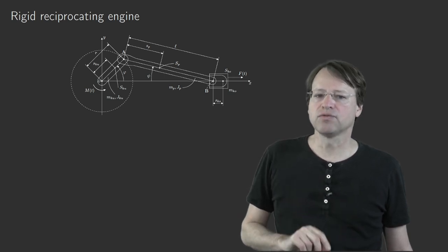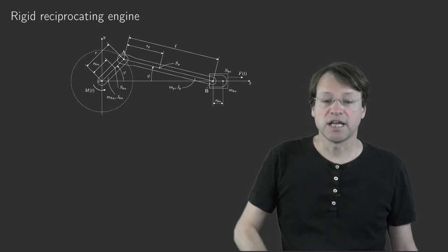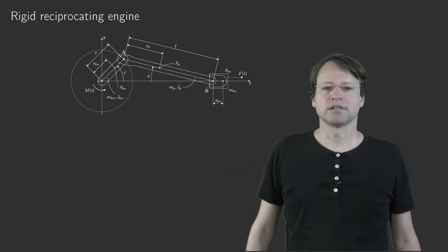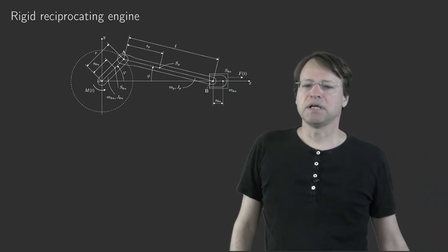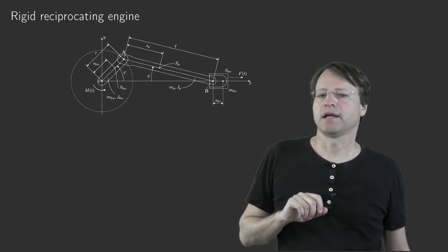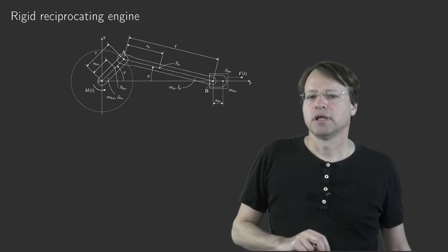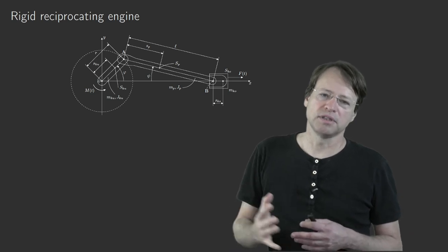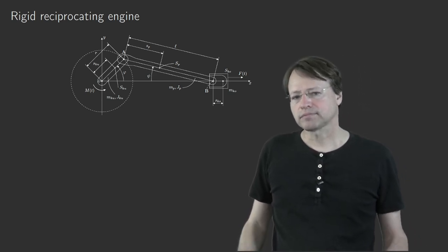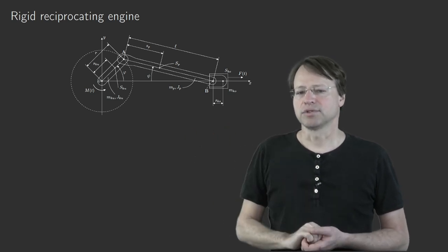Once we determine these reaction forces, an important question is whether it is possible to reduce them to zero — in the same sense as we balanced a rotor with an imbalance. Here, however, we do not speak of classical balancing; it is rather a balancing of masses in periodic motion. The ideal behavior already has reaction forces, and the question is whether we can modify the design such that those reaction forces become zero.